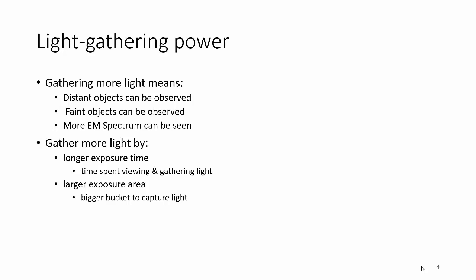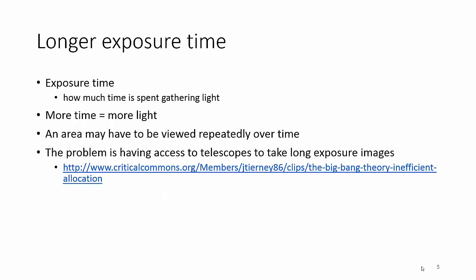How do you gather more light? Well, longer exposure time, right, so staring at it for longer will get you more light. Or a larger bucket, right, bigger telescope. Bigger telescope will get you more light. Okay, so longer exposure time. Once you have a telescope, how much exposure you have to it will determine how much light you get. Now, there's a couple different ways to do that. You can either stare at a certain area for a long time, or you could look at the area and then come back a little bit later and look at the same area and kind of piece that together.